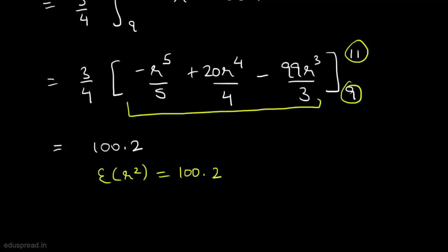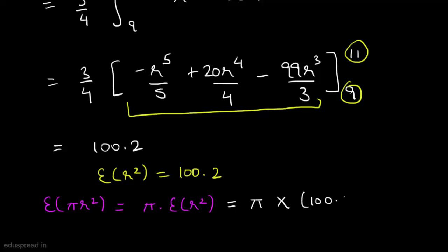Now let's calculate the expected area of the resulting circular region. We know we have to calculate the expected value of π·r², which equals π multiplied by the expected value of r². This is equal to π multiplied by 100.2, and solving this we get 314.787.